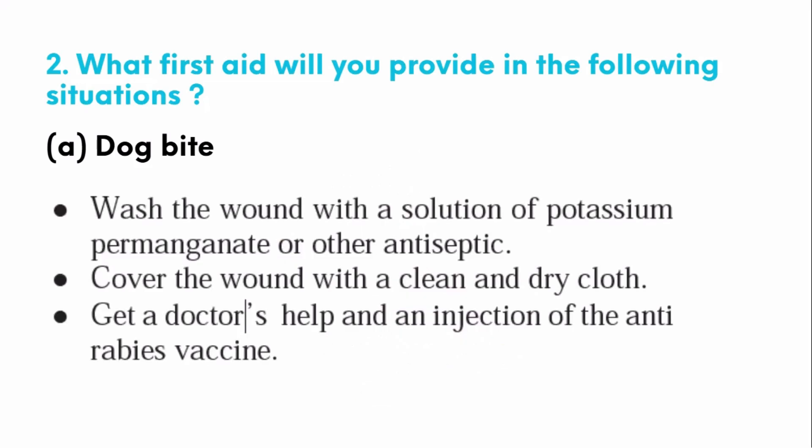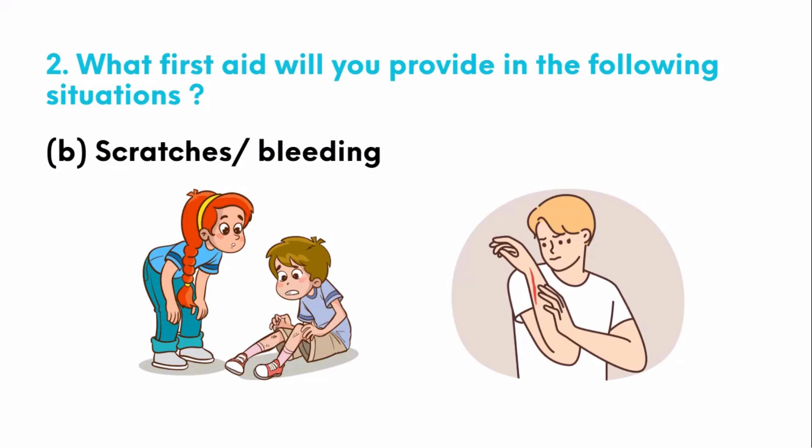What first aid should you provide when a dog bites someone? Wash the wound with a solution of potassium permanganate or other antiseptic. Cover the wound with a clean and dry cloth. Get the doctor's help for an injection of the anti-rabies vaccine. Rabies is a disease which occurs due to a dog bite.